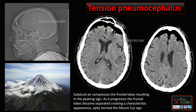On the axial CT sections, you can clearly see there is free air which is causing compression of the frontal lobes and also causing separation of the frontal lobes from the calvaria. This free air is also extending along the falx, causing compression of the frontal lobes — this is nothing but a classical case of tension pneumocephalus.